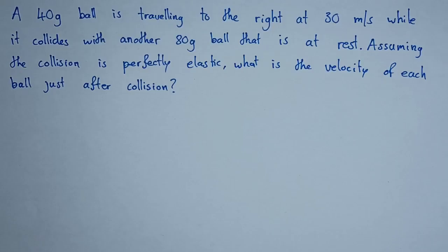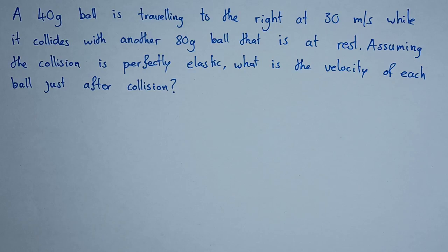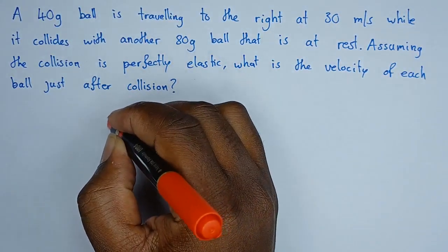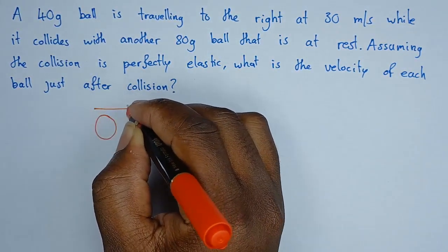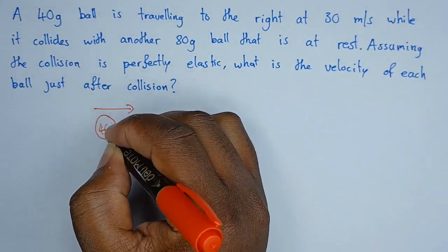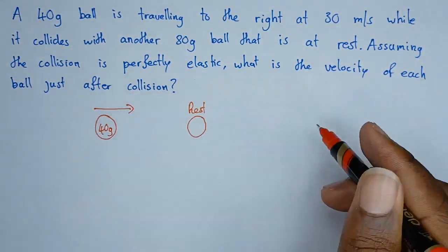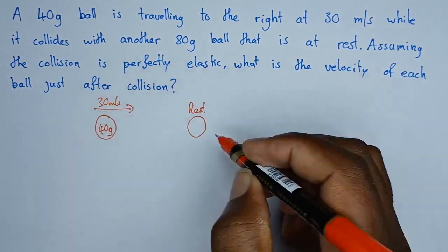Today we'll be looking at a question on momentum and drawing some diagrams to help understand the concept. The question: a ball is traveling to the right at 30 meters per second and collides with another ball which is at rest. We have the first ball moving to the right — it is 40 grams — colliding with another ball at rest, moving at 30 meters per second, and that second ball is at rest.